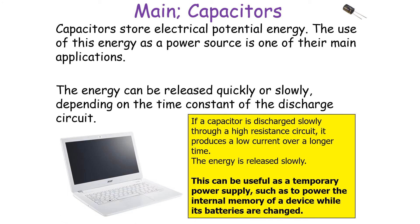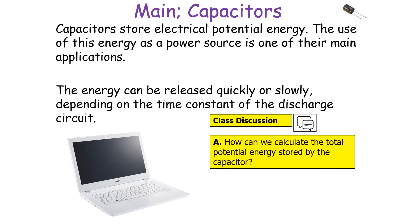If the capacitor is discharged slowly through a high resistance circuit, it produces a low current over a longer time, and the energy is released slowly. This can be useful as a temporary power supply, such as to power the internal memory of a device while its batteries are changed or recharged.